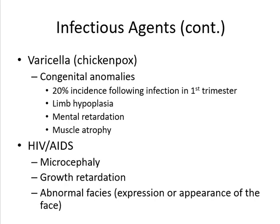Another infectious agent is varicella (chickenpox): it may lead to congenital abnormalities in about 20 percent of cases following infections in the first trimester, leading to limb hypoplasia, mental retardation, and muscle atrophy. HIV or AIDS may lead to microcephaly, growth retardation, and abnormal facial features.